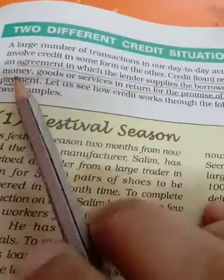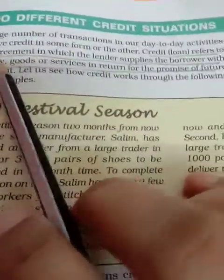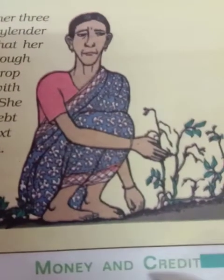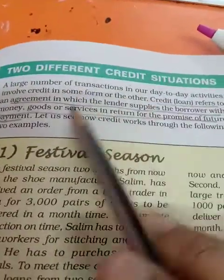Now the 10th class economics. The next page I am reading is the 43rd page. Indian Money and Credit, third chapter — two different credit situations.